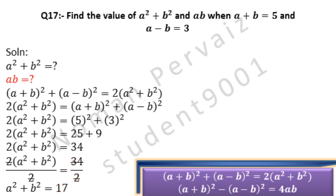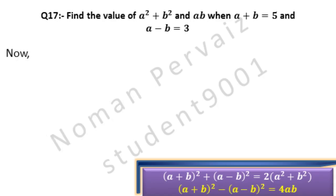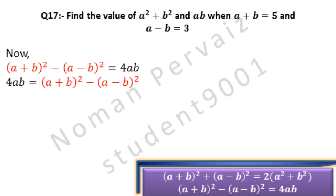Next we will find ab. We will apply the second formula. As we have to find ab, we write 4ab on the left-hand side and rearrange: 4ab = (a + b)² − (a − b)².